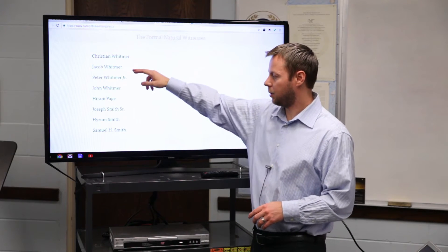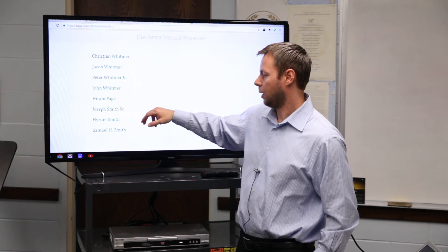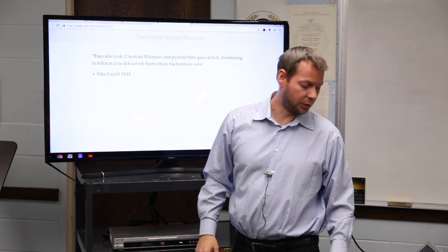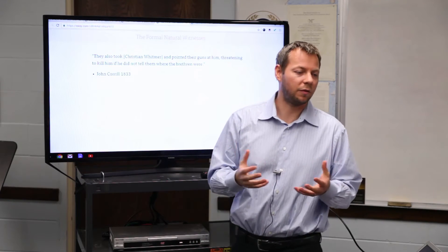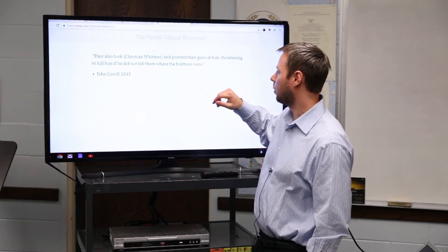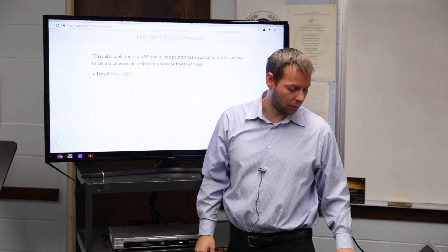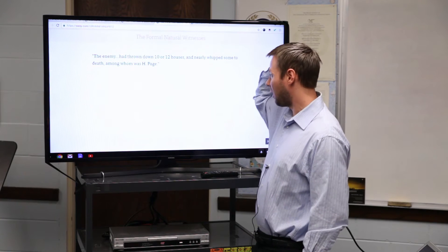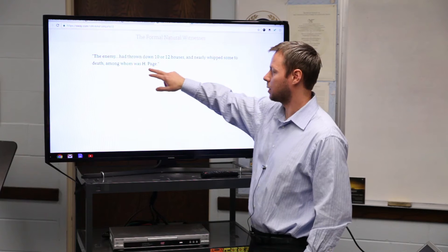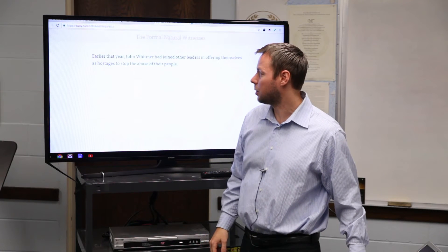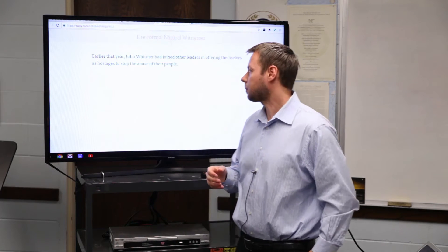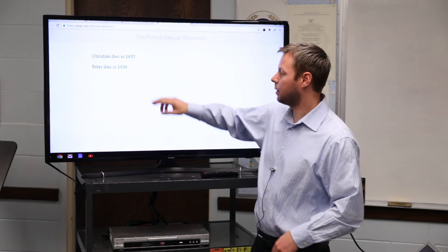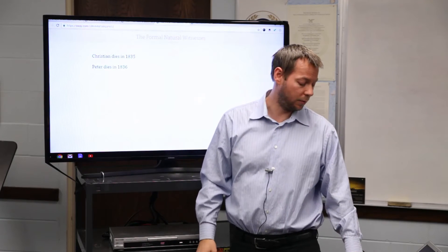Who are these men? Mostly the Whitmer family. Hiram Page ends up being a son and brother-in-law of the Whitmers, and then some of the Smith family: Joseph's dad, his brother, and his two brothers, older and younger. Now we get to Missouri. Most of the witnesses deal with a lot of persecution. John Corral records that they took Christian Whitmer and pointed their guns at him and threatened to kill him. The enemy had thrown down 10 or 12 houses and nearly whipped some to death, among whom was Hiram Page.